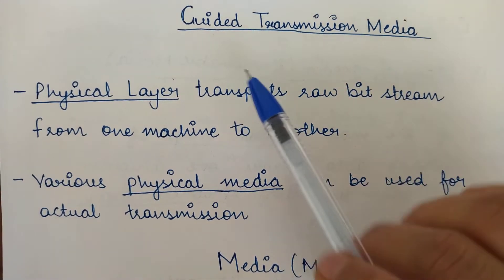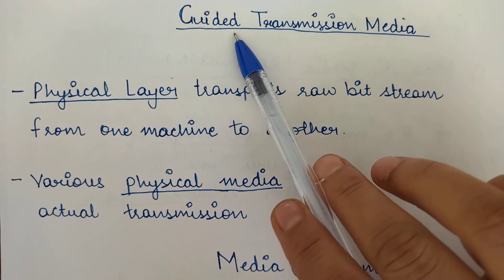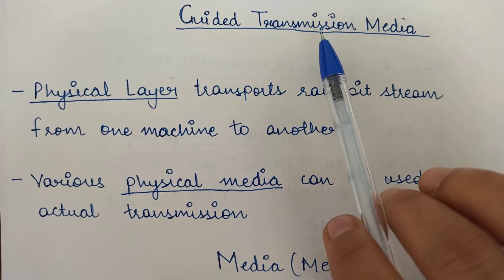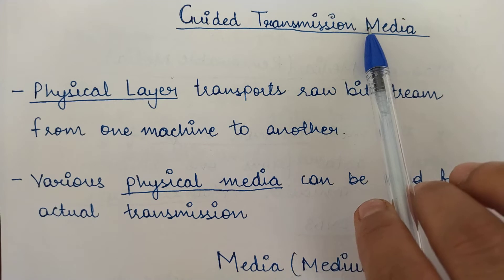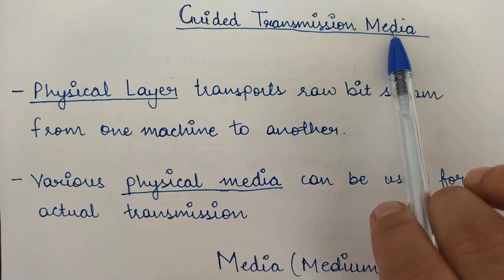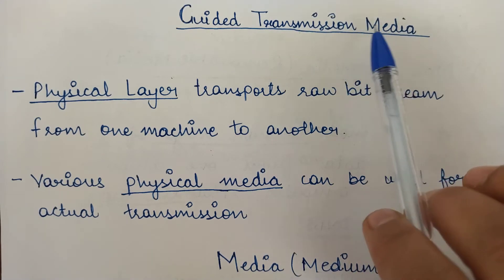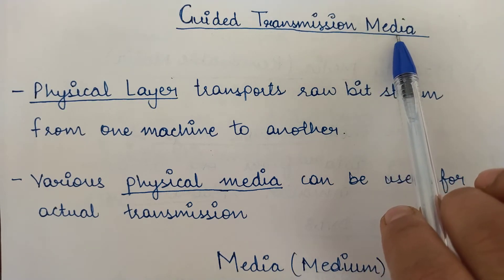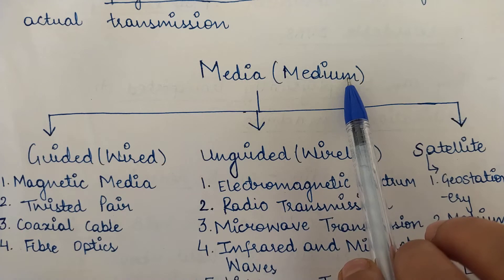Today we are going to study guided transmission media. Before we jump into guided transmission media, we must know what transmission media is. Basically, transmission media is that particular medium or link through which data is transmitted in a network from one sender to another receiver. It helps transmit data from the source to destination and is also known as the communication channel, transmission medium, or transmission links.